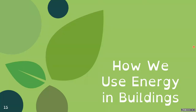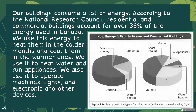So let's dive right in — how we use energy in our buildings. Our buildings consume a lot of energy. According to the National Research Council, residential and commercial buildings account for over 36% of the energy used in Canada. We use this energy to heat them in the colder months and cool them in the warmer months. We use it to heat water and run appliances, and also to operate machines, lights, and electronic and other devices.